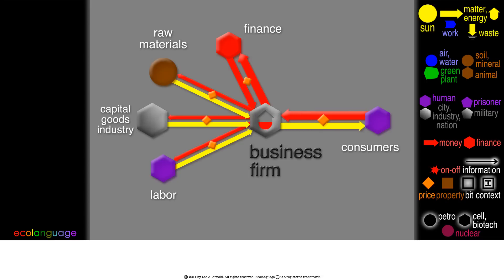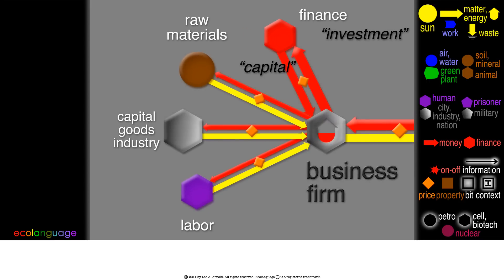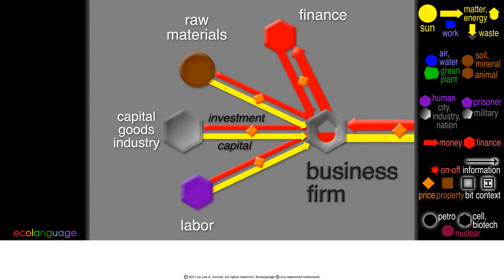Now, people often call money capital, and finance is called investment. But economists use the words differently. Capital always means physical capital, like buildings and machines. Investment is the spending only on physical capital and on inventory.